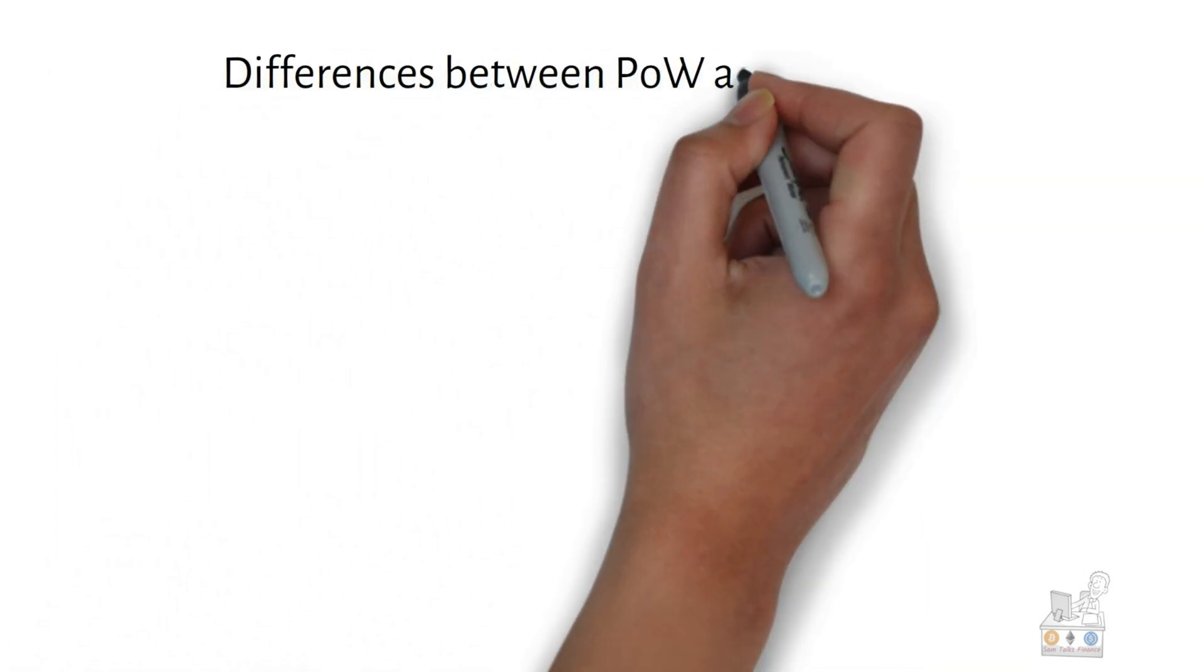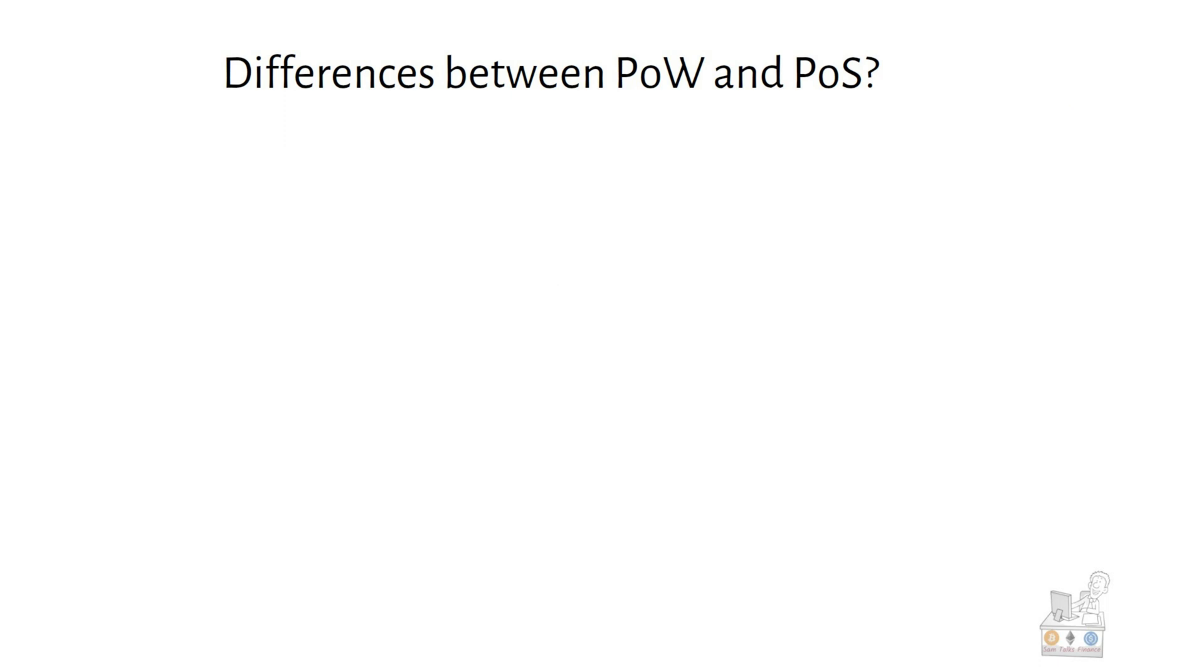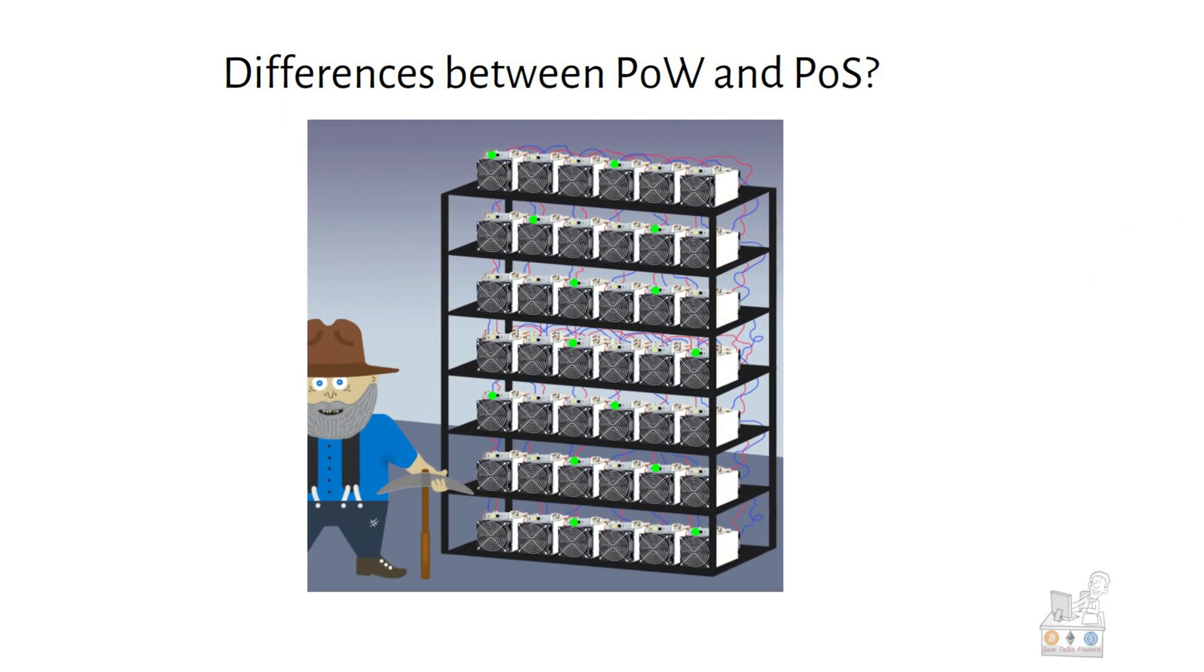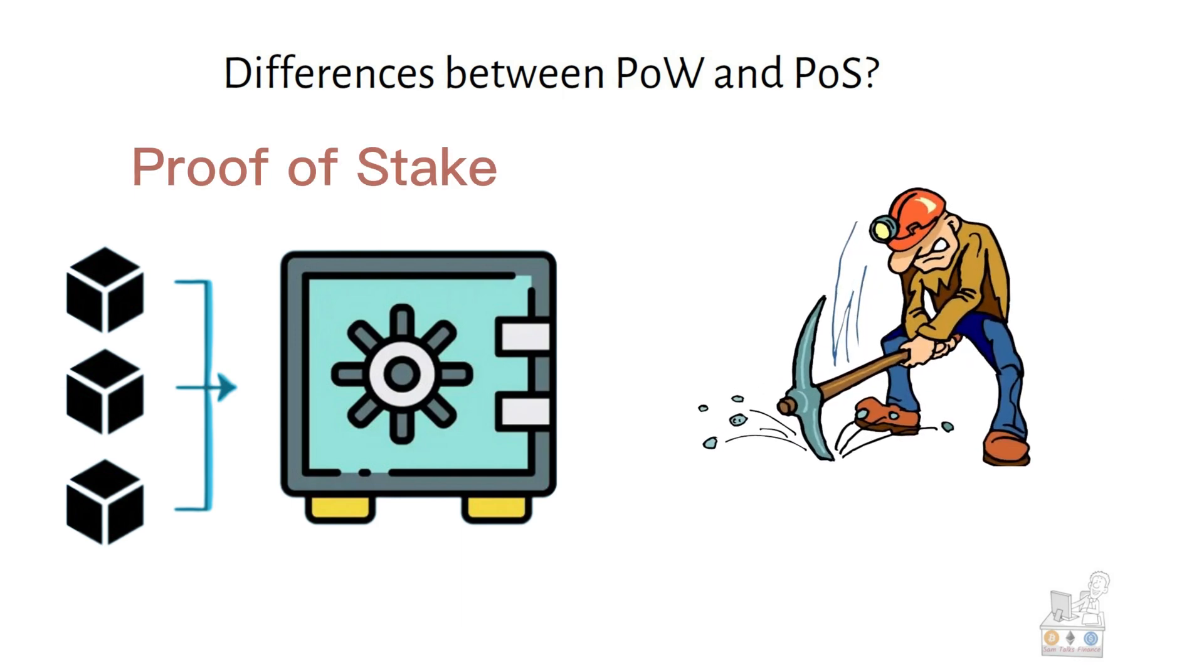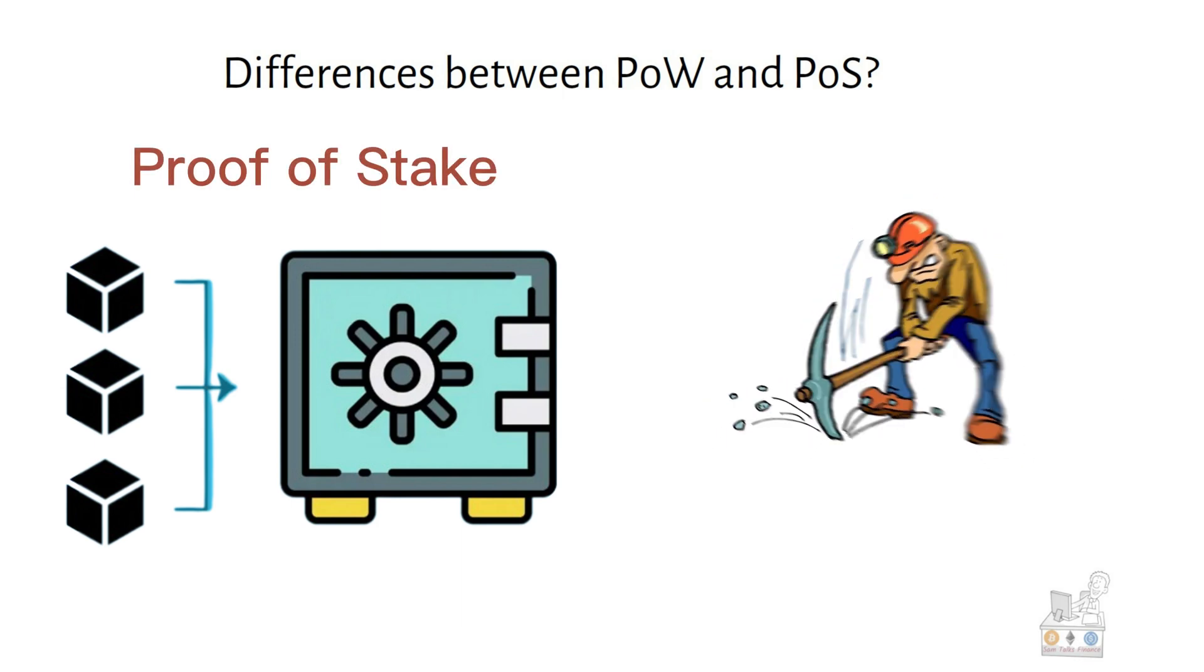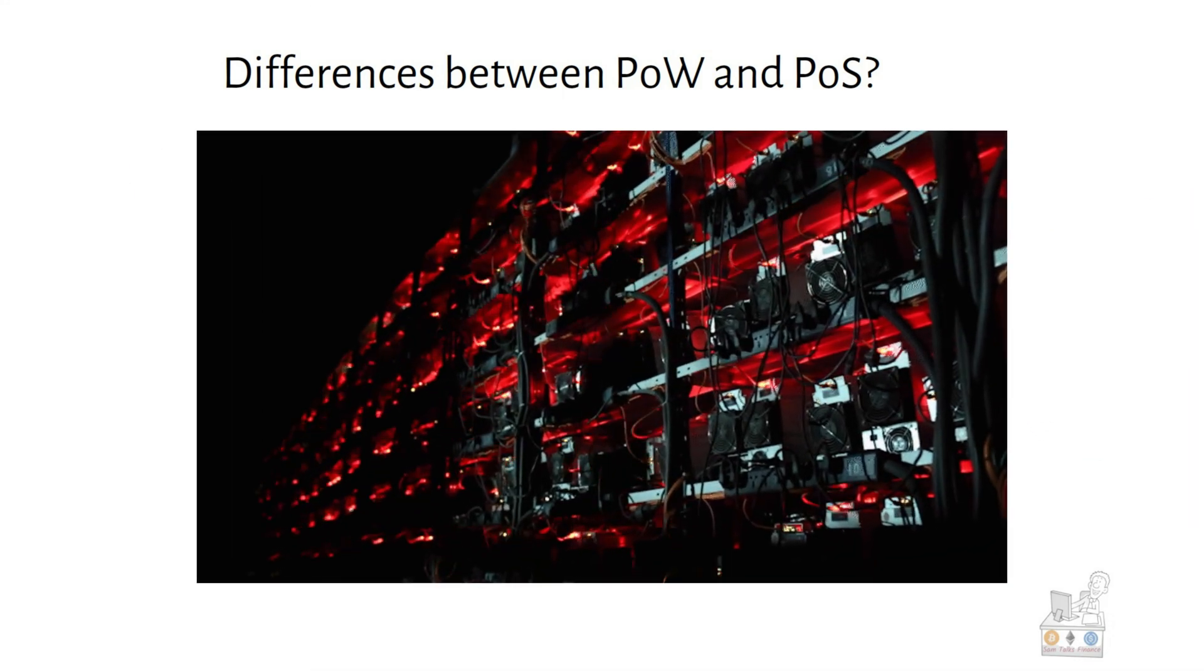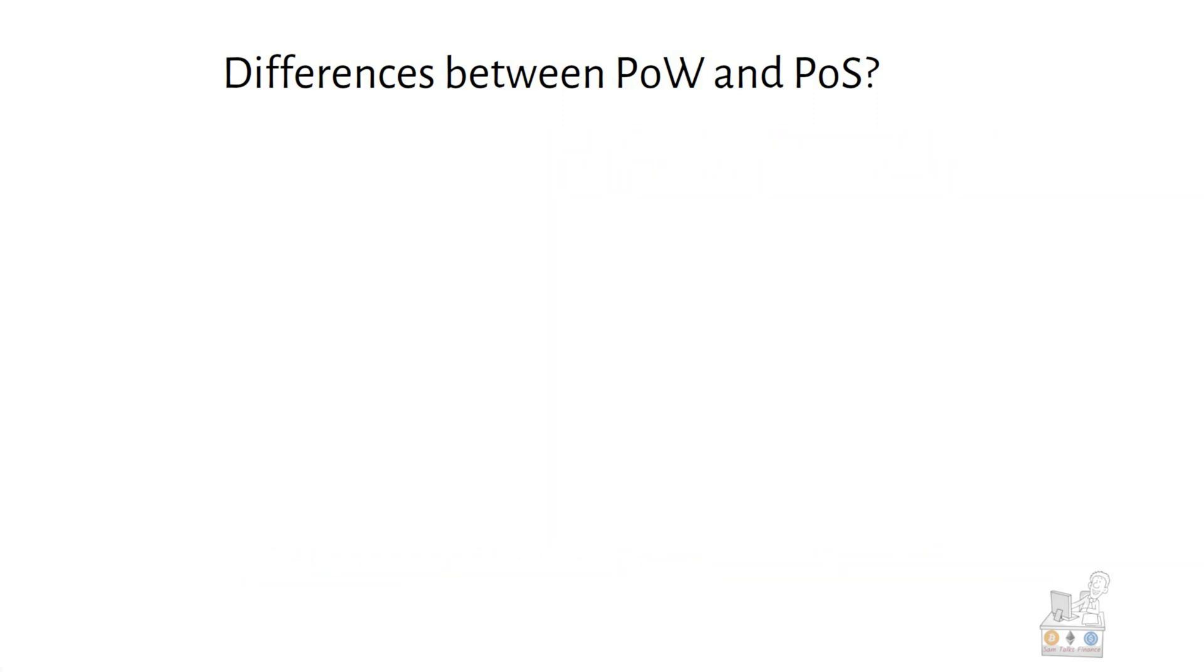Proof-of-work and proof-of-stake have key differences. Energy consumption is a major difference. In proof-of-stake blockchains, miners solve complex puzzles requiring high-energy use machines.